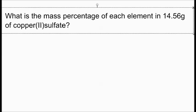So, where do we go from there? Well, let's look at the question and see what we need and see what we don't need. One of the first things we don't need is that 14.56. No matter how much copper sulfate we have, the percentages are always going to be the same.